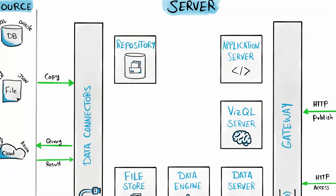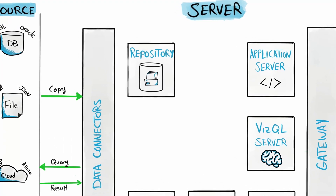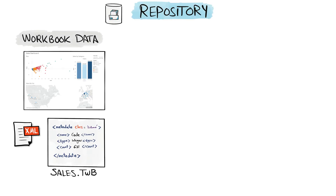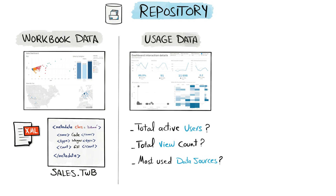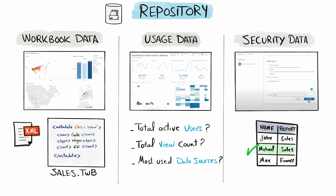The repository was involved in every Tableau process. It stores many different types of data. For example, it stores workbooks published to the server — but only the metadata part, not the data itself — so the XML files from workbooks are stored here. The repository also contains usage data that helps you understand performance and traffic, like the total number of active users, total view counts by day, and the most used data sources. It also stores security information, such as which users are allowed to access content or the Tableau Server.